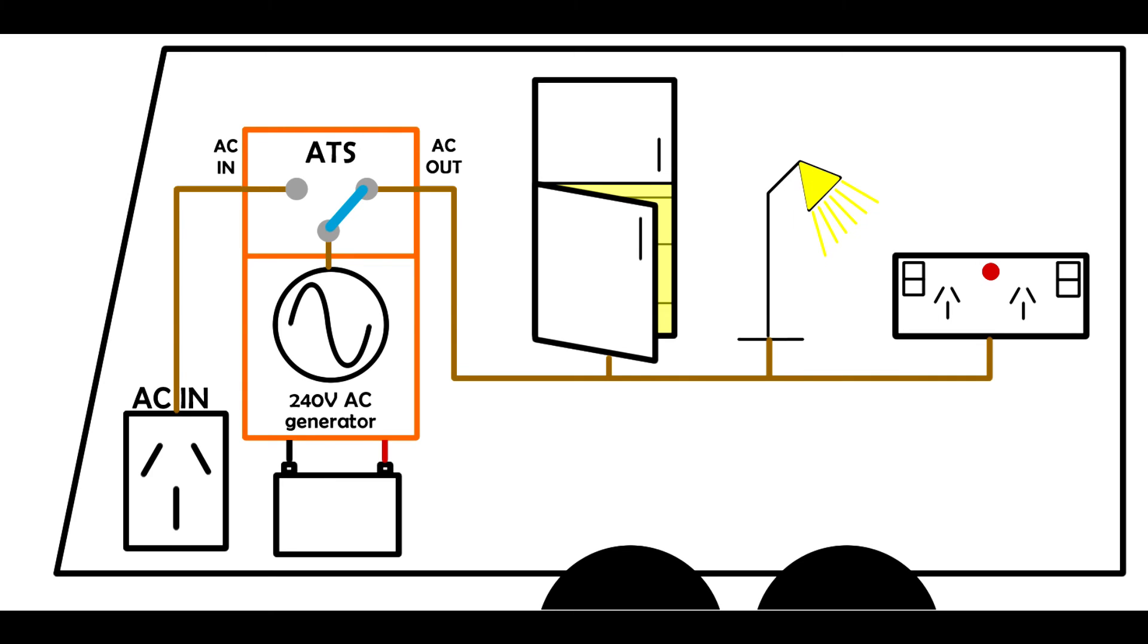As soon as you connect mains power back in, the automatic transfer switch jumps straight back to mains power and your appliances start running from the mains power, and it's so quick they just keep on running as though nothing happened.